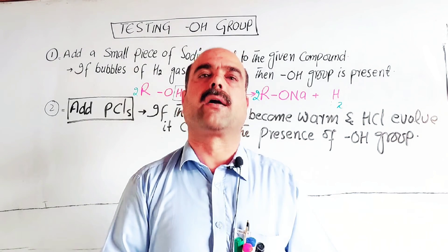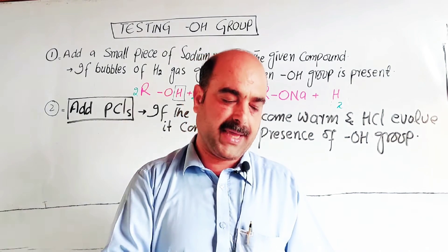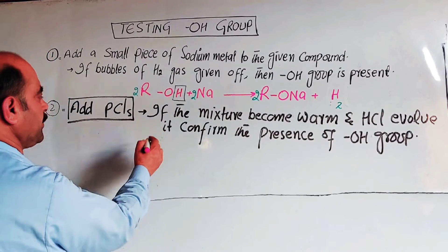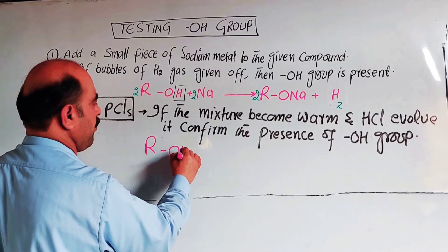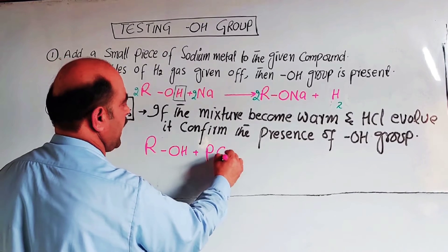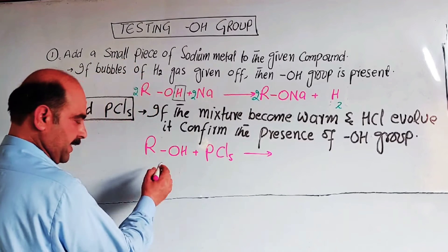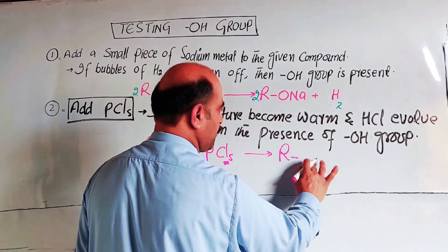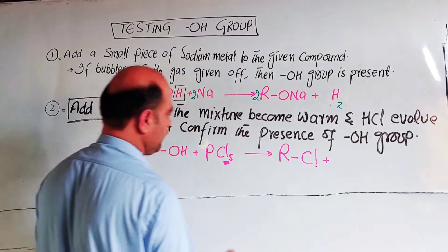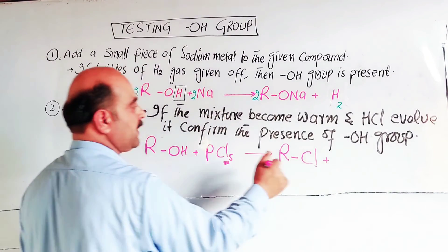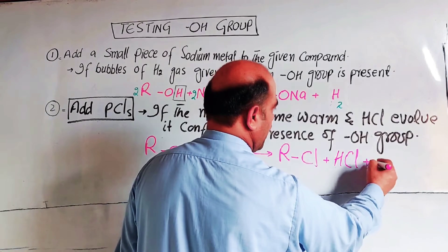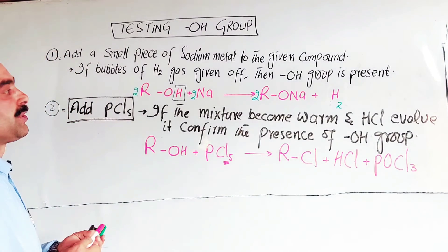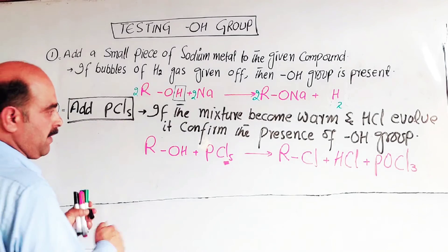When phosphorus pentachloride is added to the given compound, the mixture becomes warm and HCL fumes are given off. The chlorine from PCL5 replaces the OH group, forming an alkyl halide (RCl), plus HCL is evolved, and phosphorus oxychloride (POCl3) is also formed.